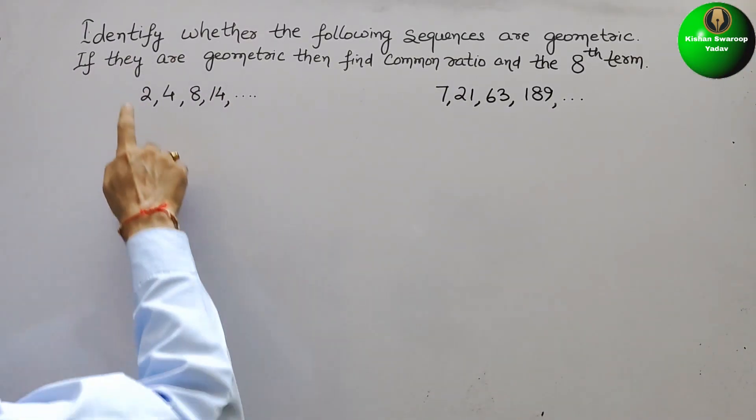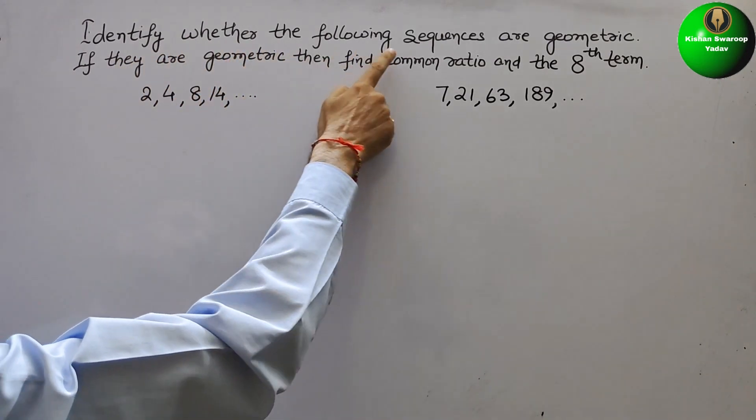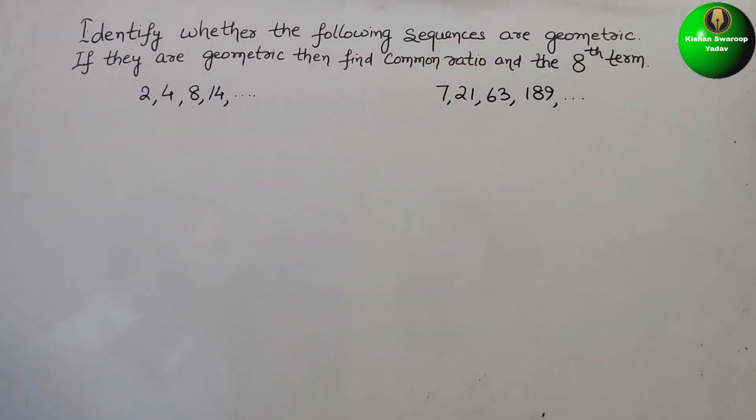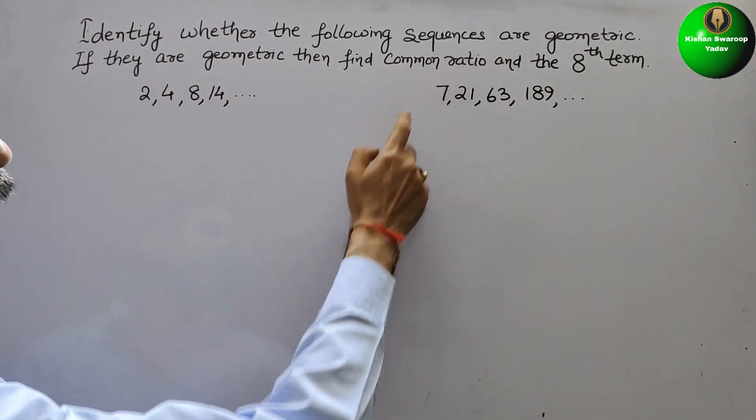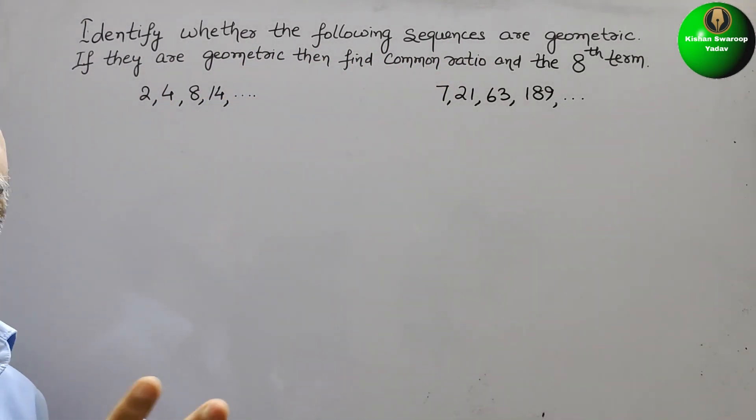Your question is, identify whether the following sequences are geometric. If they are geometric, then find common ratio and the eighth term.